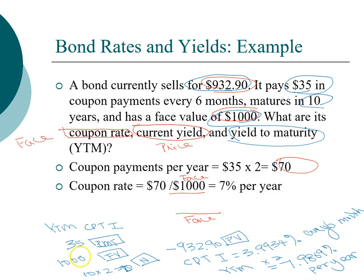If that happens, then your return over the entire 10 years, the 20 payments, is going to be 7.99%. And that is why it's called yield to maturity.